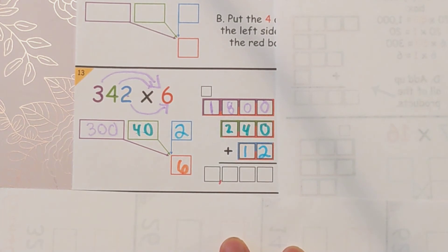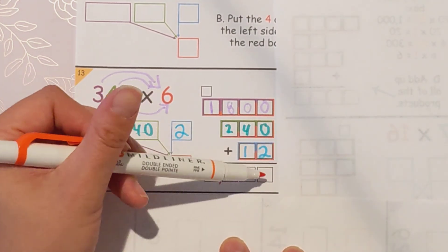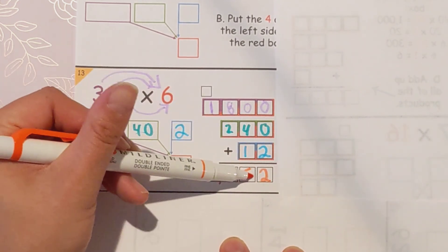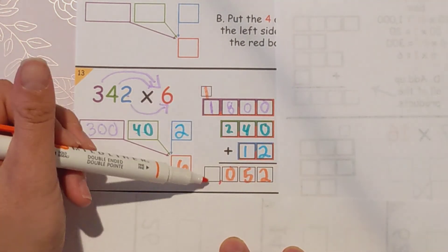The last step is just to add them all together. Starting on the right, zero plus zero plus two is two. Four plus one and zero is five. Eight plus two is 10, carry the one. And one plus one is two.